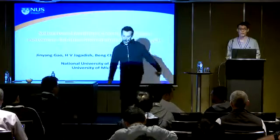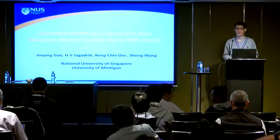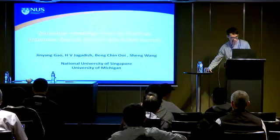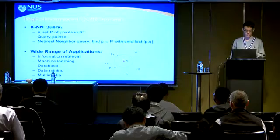Hello everyone, I'm Jingyang. Today I will talk about my work on selective hashing. It is a meta method that connects the radius search problem and the KNN search problem. Let me first look at the high-dimensional KNN search problem.